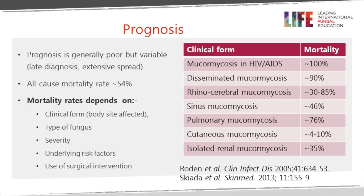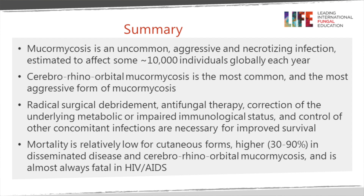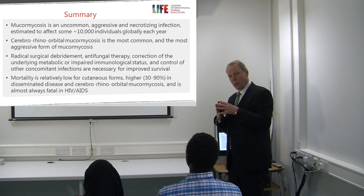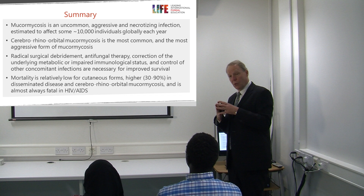In summary, mucormycosis is an uncommon but aggressive necrotizing infection, probably affecting more than 10,000 people but rare in many countries. Rhinocerebral and orbital mucormycosis is the commonest form. Radical surgery, antifungal therapy, and correction of underlying metabolic or immunological defects are very important. Survival is better with cutaneous disease but very poor with disseminated disease.